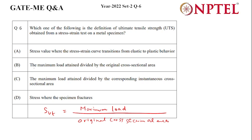Looking at the options, option B states maximum load attained divided by the original cross-sectional area, which matches our definition. So option B is the correct answer. Thank you.